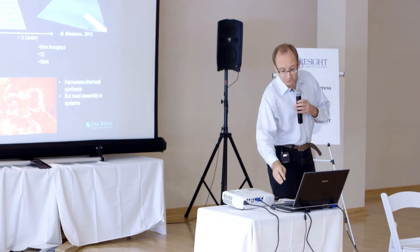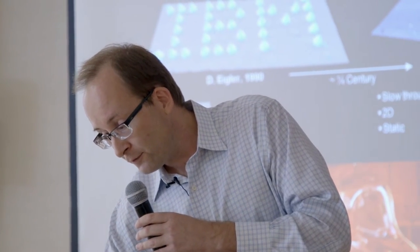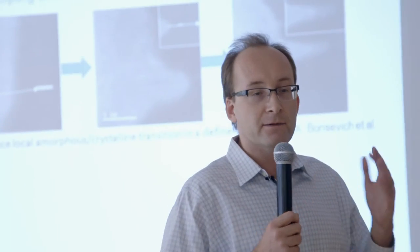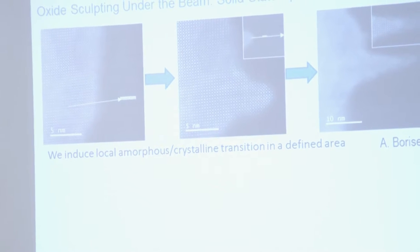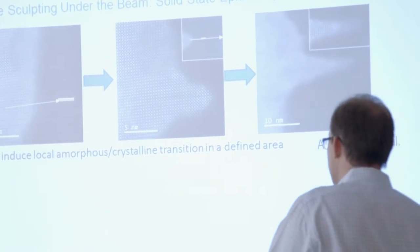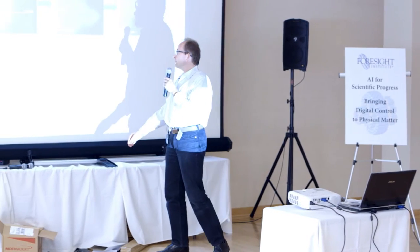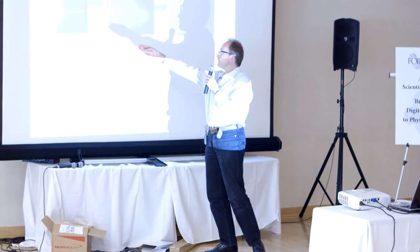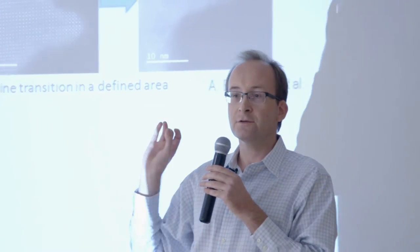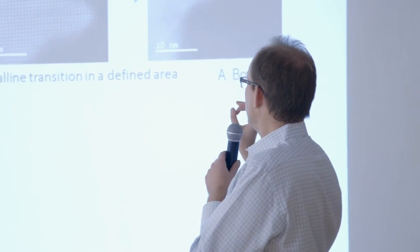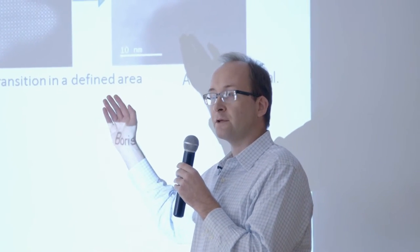So what I want to bring to your attention is what we think is the third way of doing it. And as many things, it started by a random observation. So about several years ago, when we noticed that if you stick the material covered by amorphous version in the electron microscope, the electron beam can induce the crystallization of the material. And while it does it, we can actually observe it with atomic resolution.